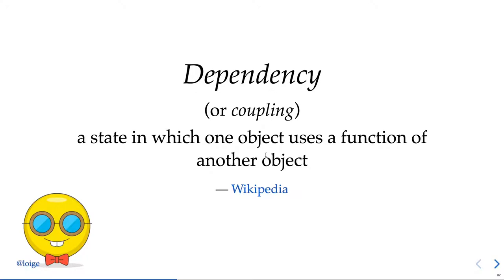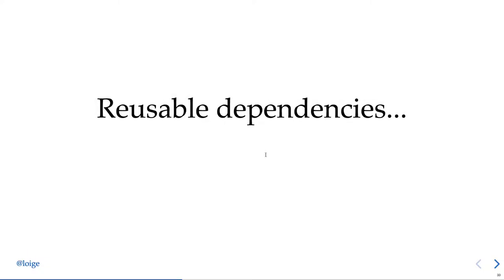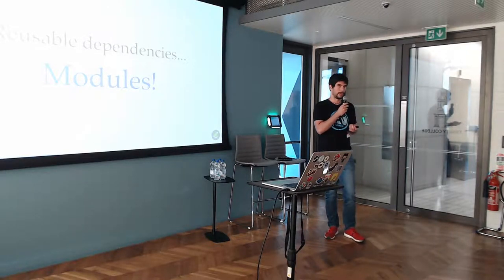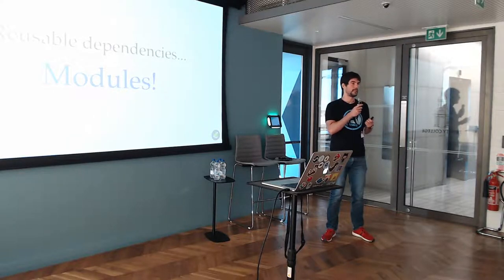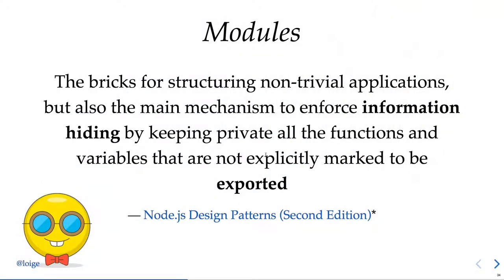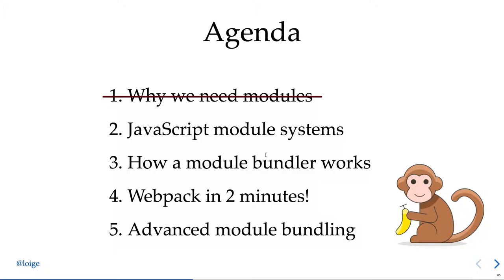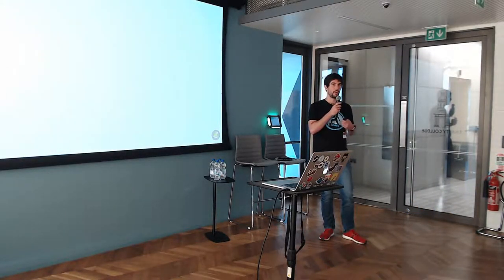So what really is a dependency? According to Wikipedia: a dependency or coupling is a state in which one object uses a function of another object. But what we really need is reusable dependencies — something you can just take and port to another project. When we do that it's better to call that a module. My definition: modules are the bricks for structuring non-trivial applications, and the main mechanism to enforce information hiding by keeping private all functions and variables not explicitly marked to be exported.